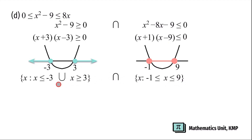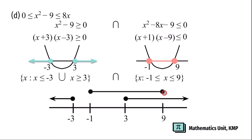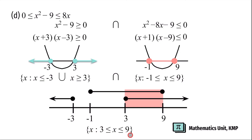Next, let us find the intersection of the two solutions by drawing a number line. For x ≤ -3 union x ≥ 3, draw the appropriate arrows. For x ≥ -1 and x ≤ 9, draw two closed circles connected by a straight line. Now find where the two lines overlap. The final solution is x such that x ≥ 3 and x ≤ 9.